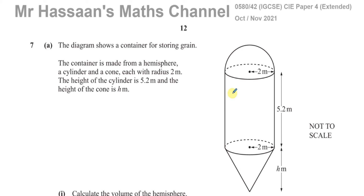Welcome back, this is Mr. Hassan's Maths channel. This is question number seven, part A from the October/November 2021 International GCSE (IGCSE) Cambridge 0580 syllabus, paper four, variant two.